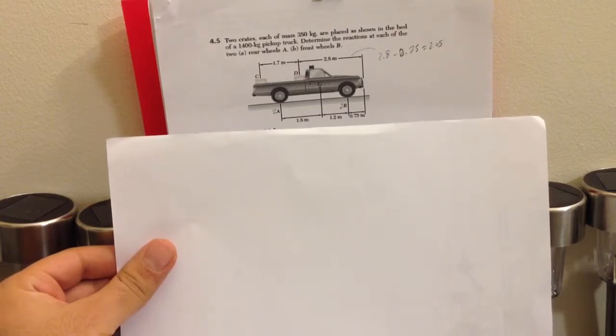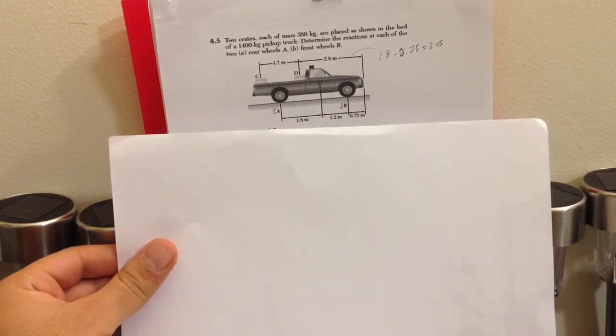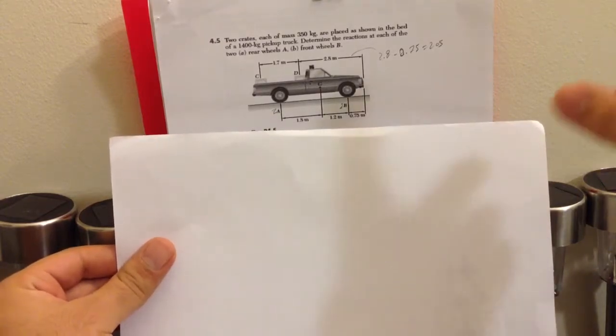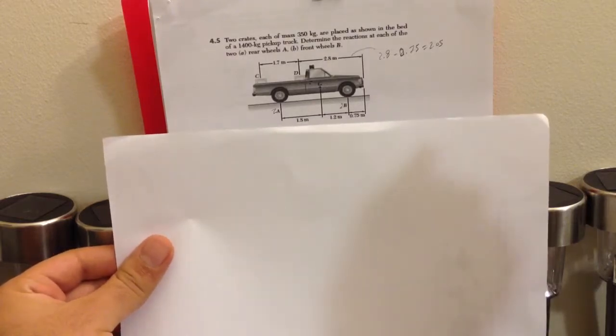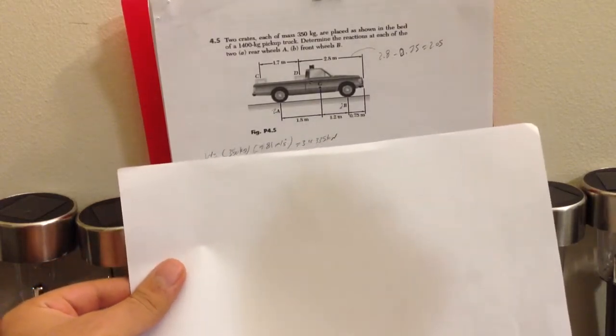To read the question: two crates each of mass 350 kg are placed as shown at the bed of a 1400 kg pickup truck. Determine the reaction at each of the two—the real wheel at point A and the front wheel at point B. They give us all the dimensions.